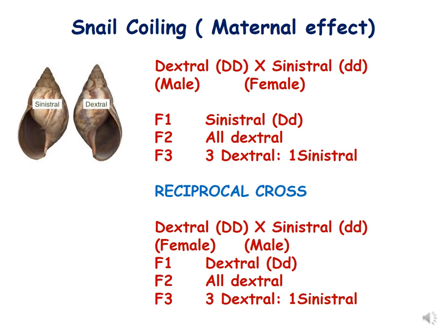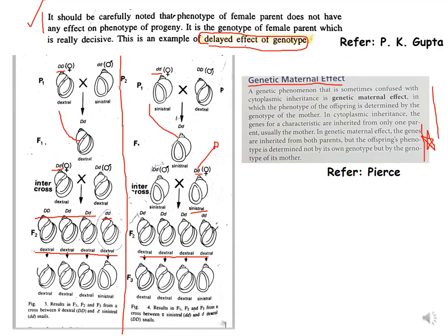How do we explain this? Is it cytoplasmic inheritance? No, this is not a typical example of cytoplasmic inheritance — it is an example of maternal effect. It should be clearly noted that the phenotype of the female parent does not have any effect on the phenotype of the progeny. It is the genotype of the female parent which is really decisive, and this is an example of the delayed effect of genotype.